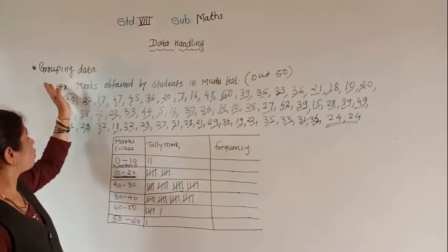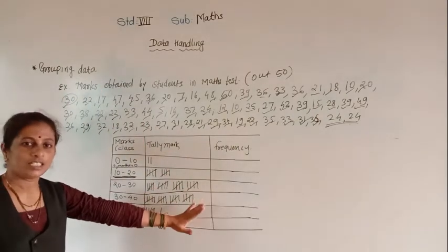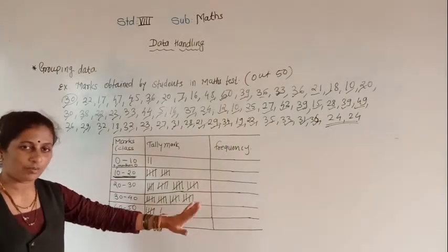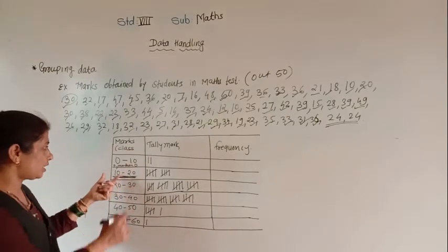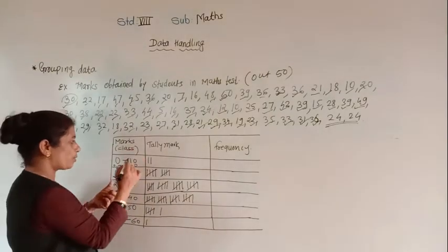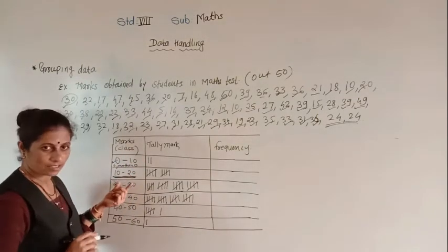This is called the group frequency distribution table. In this group frequency distribution table, these groups are called the class.